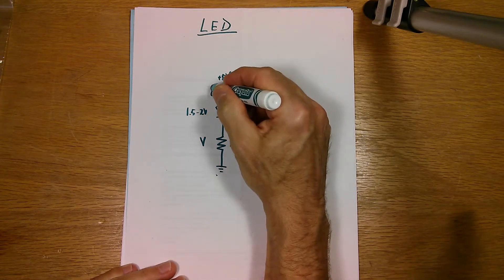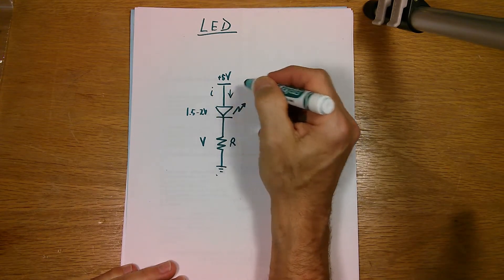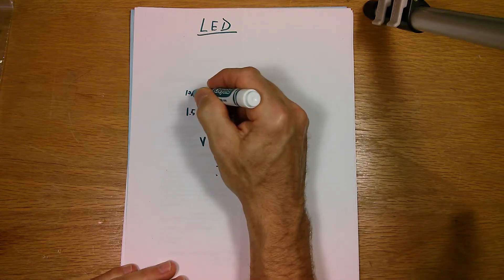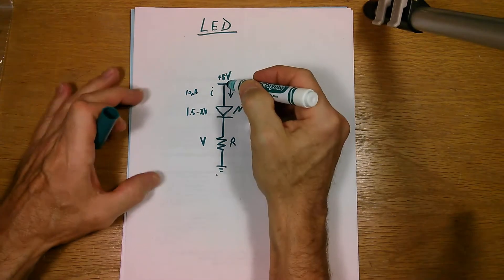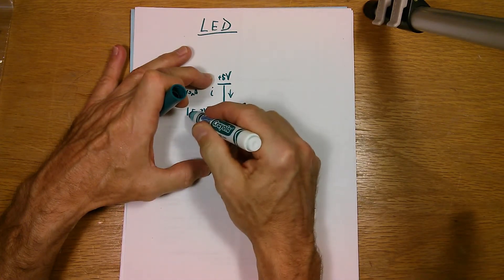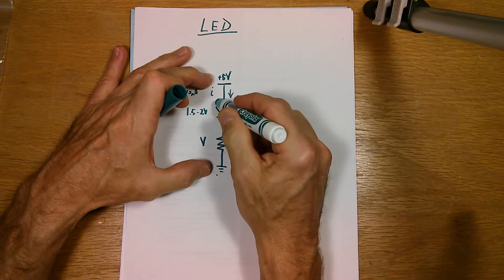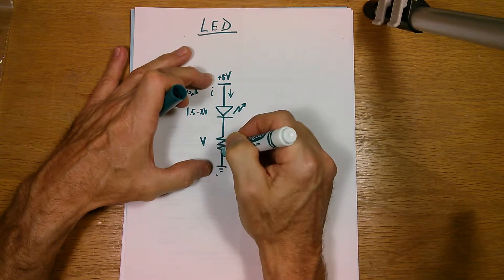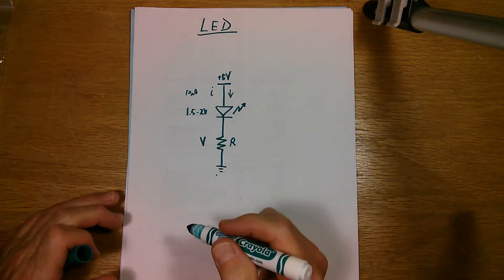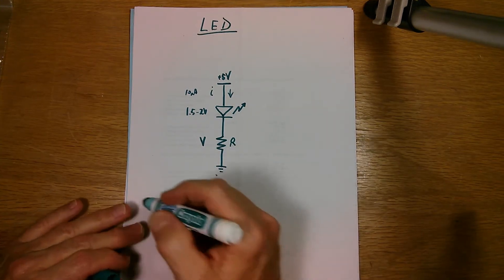So our desired current flowing through the diode in this direction is, let's make it 10 milliamps. We have 5 volts across the whole circuit. And one and a half to two volts is across the diode. So the rest of the voltage of the 5 volts is dropped across this resistor. So we apply Ohm's law and that's how we get it.